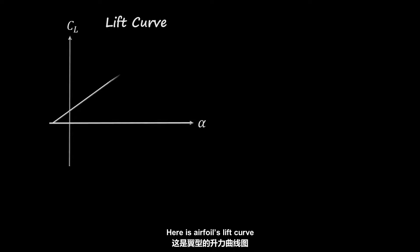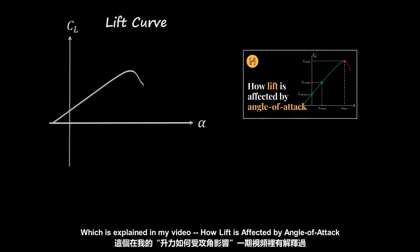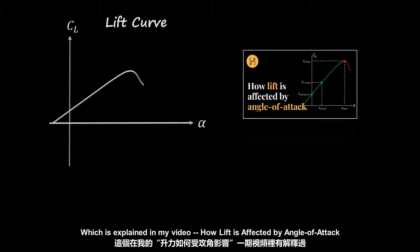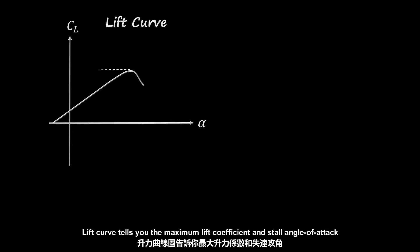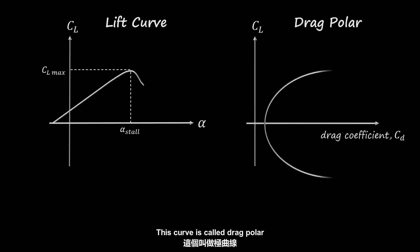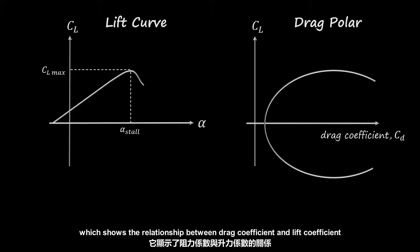So how does Reynolds number affect an airfoil? Here is an airfoil's lift curve, which shows the maximum lift coefficient and stall angle of attack. This curve is called the drag polar, which shows the relationship between drag coefficient and lift coefficient.